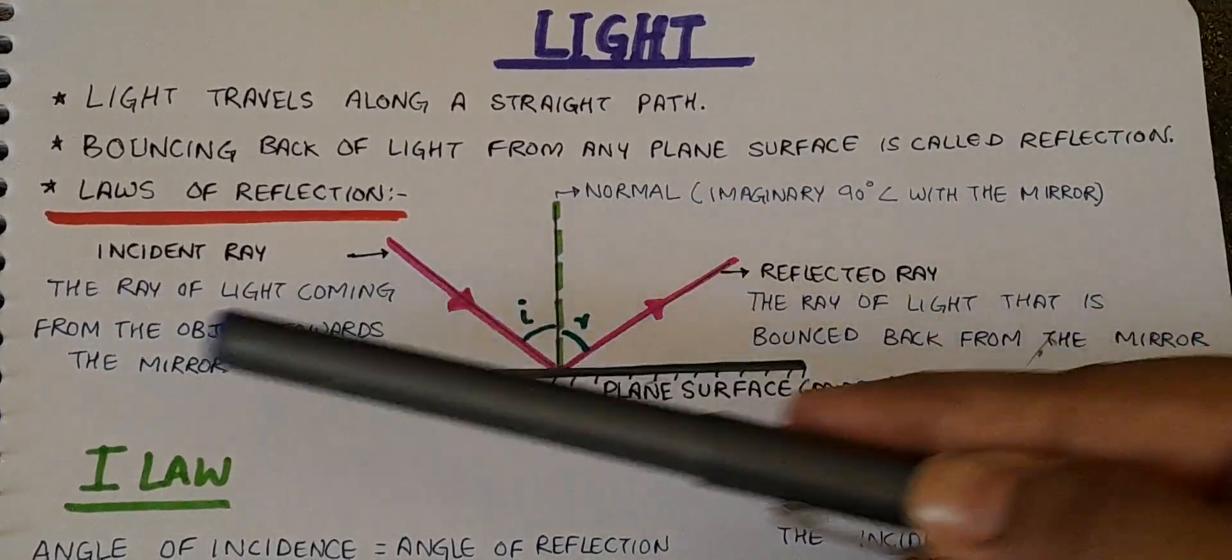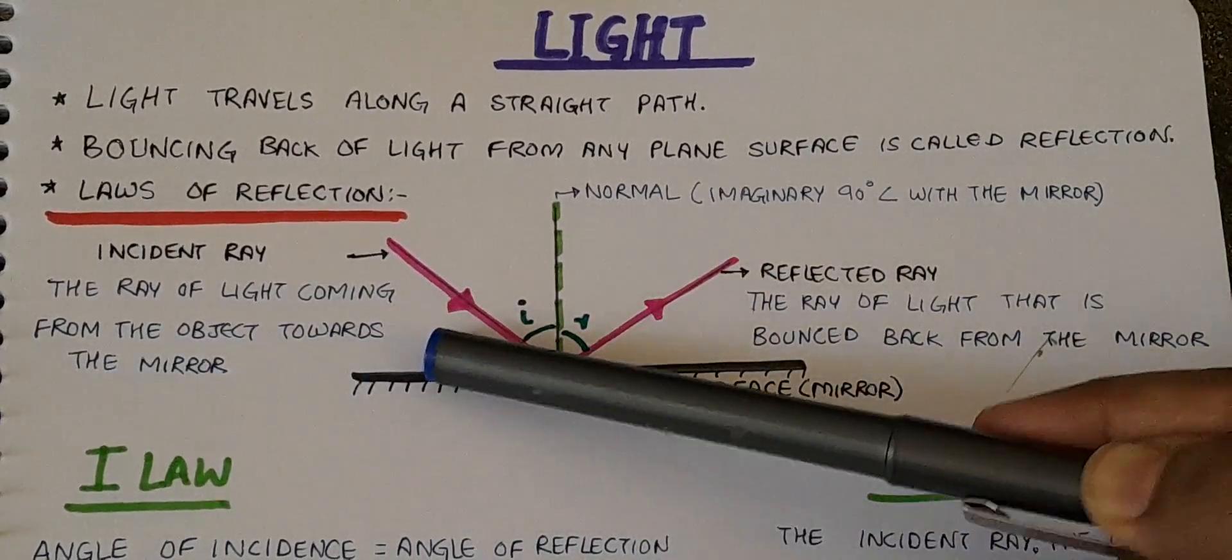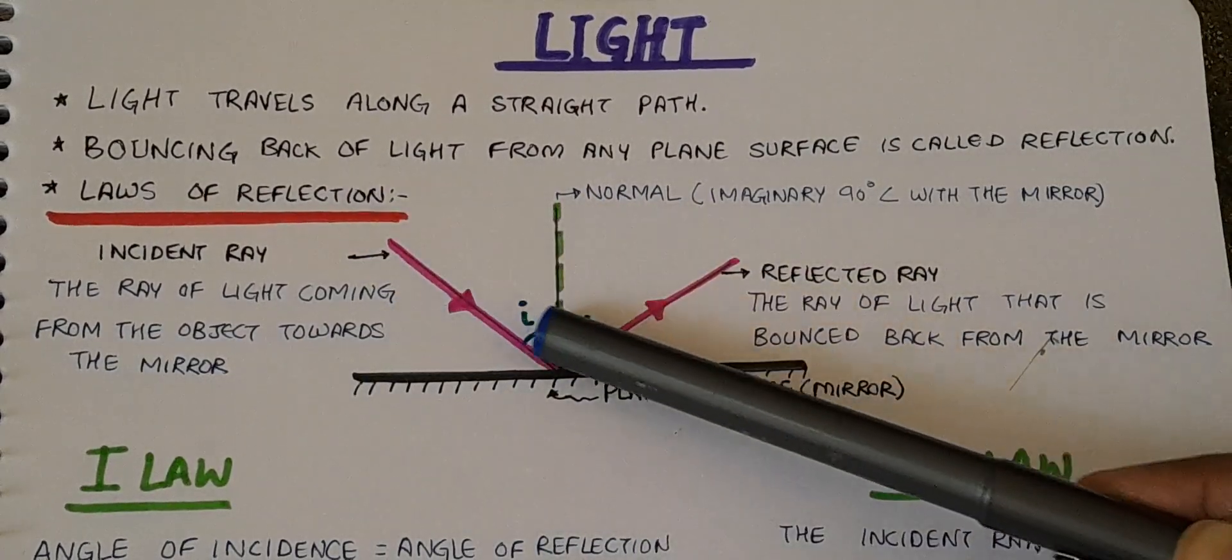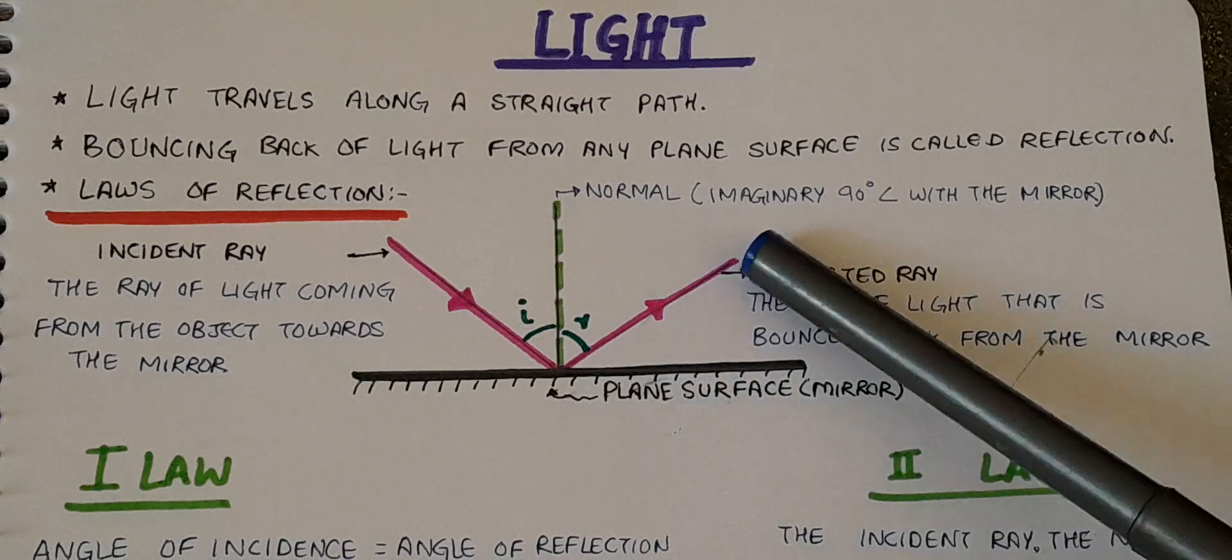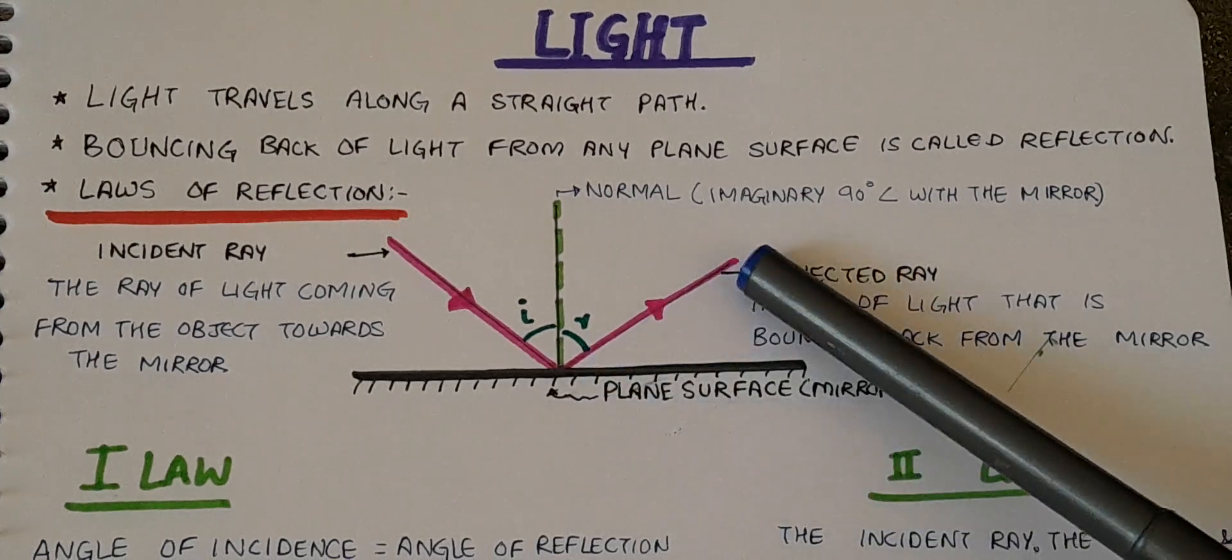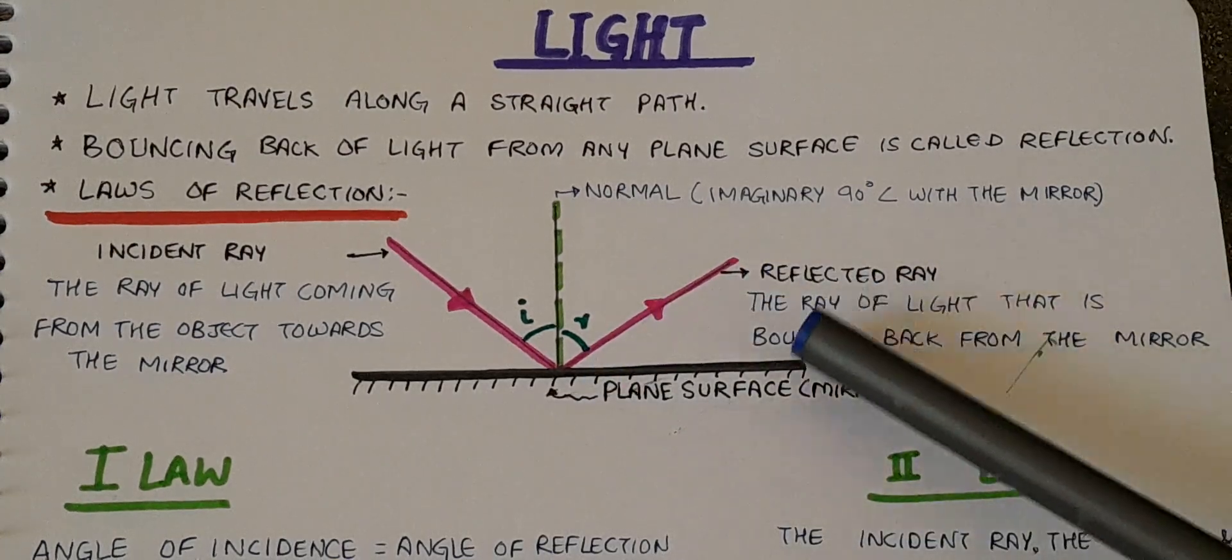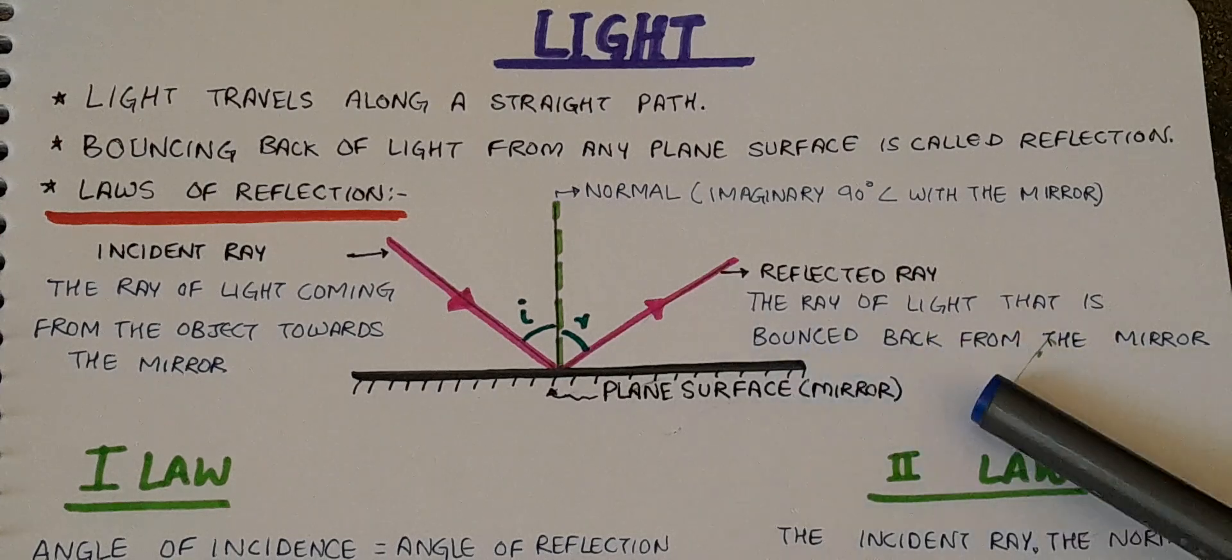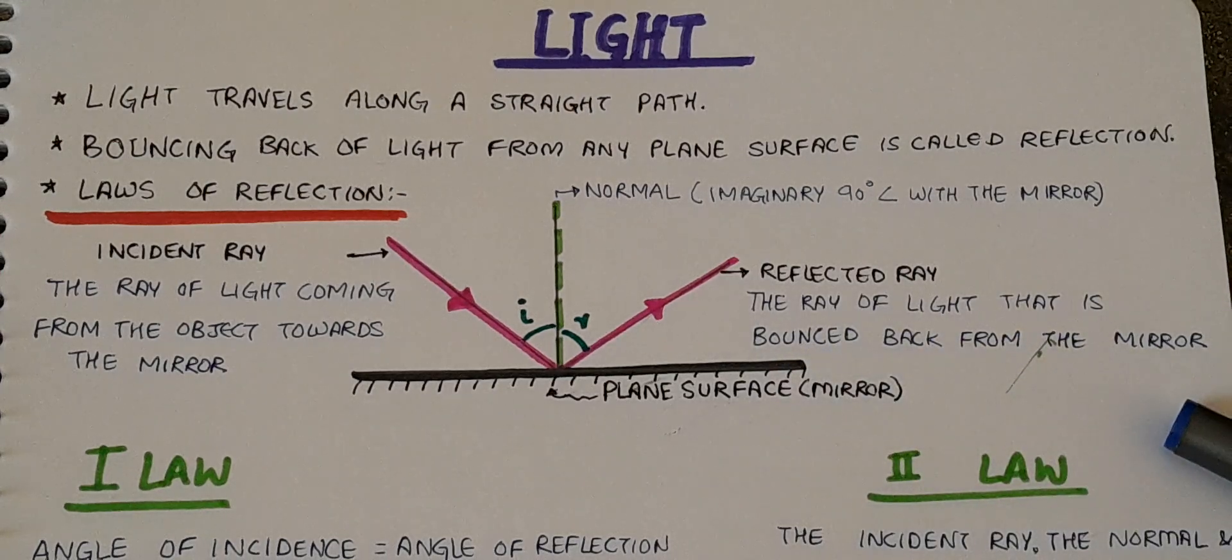The ray of light coming from the object towards the mirror. Now, when the ray of light hits the mirror, it will bounce back. The ray of light bounced back from the mirror is called the reflected ray.